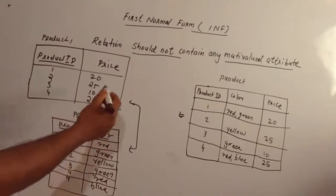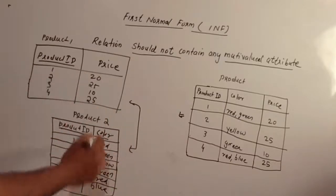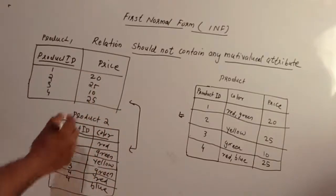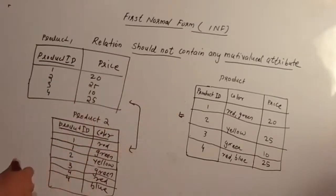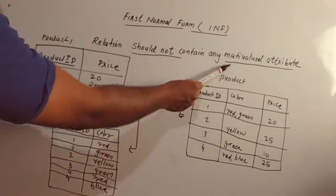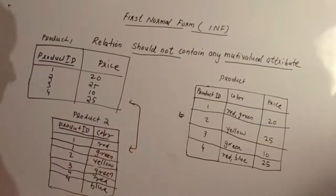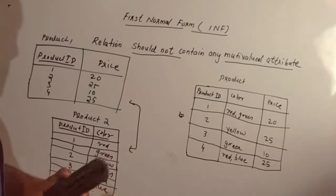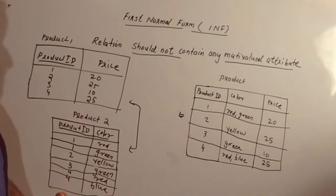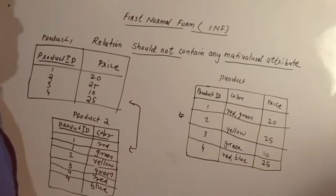We will use one table in 1NF, using any row and intersecting points. We will use the key table in 1NF. We will use the first normal form and eliminate multi-valued attributes using one table. We will next discuss the second normal form. Thank you.